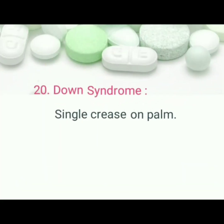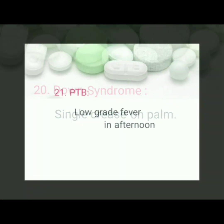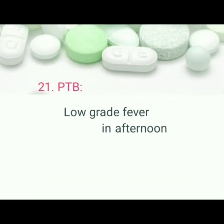Down syndrome: pathognomonic sign is single crease on palm. PTB, pulmonary tuberculosis: pathognomonic sign is low-grade fever in the afternoon.